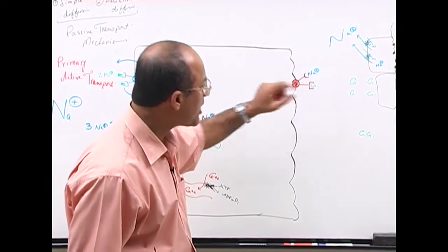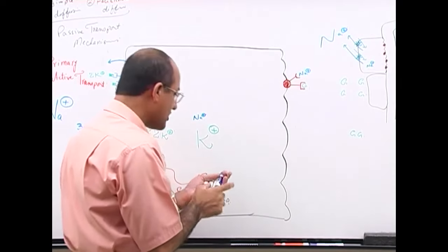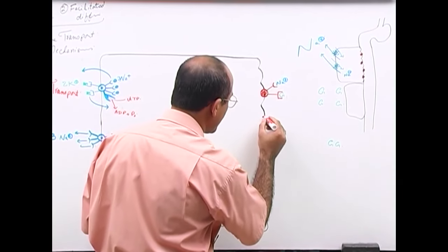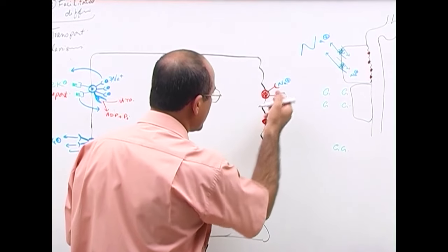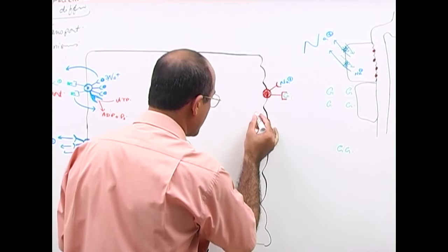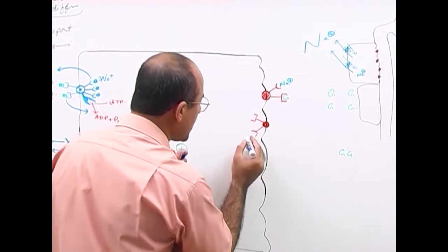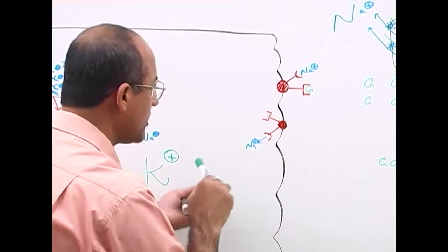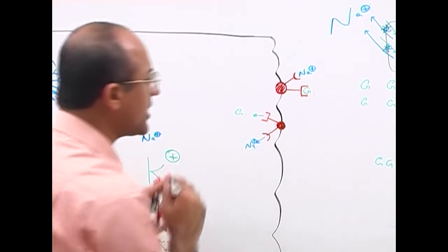When both domains are loaded, the protein will flip inside to its new configuration. Sodium will be released inside, and glucose will also be released inside the cell.